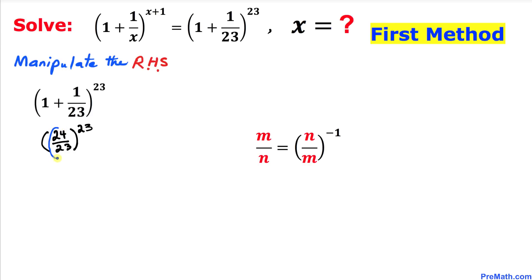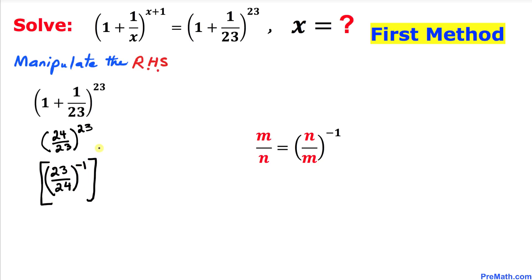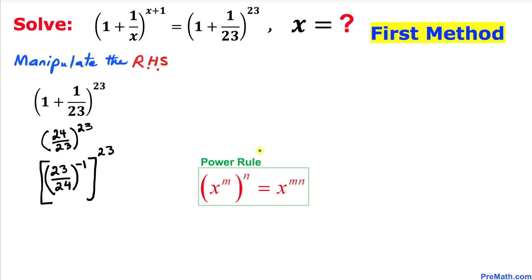Now let's focus on the fraction 24/23. We are going to use the reciprocal property, so we can write this as (23/24)^(−1). Then we also have the power 23. Applying the power rule of exponents, we multiply the nested exponents: (23/24)^(−1 × 23) = (23/24)^(−23).